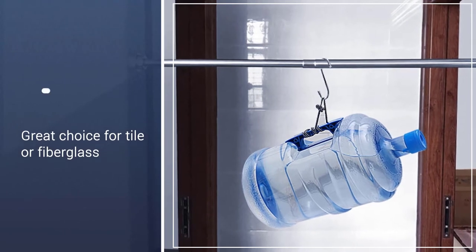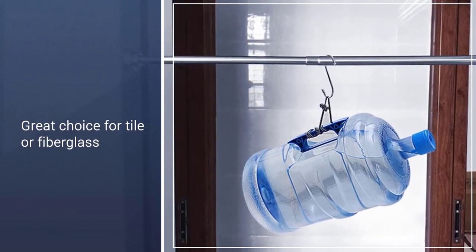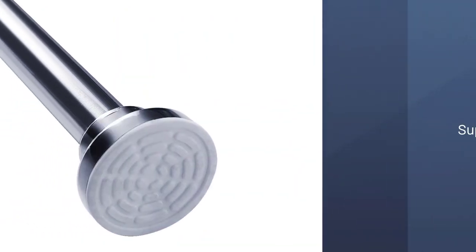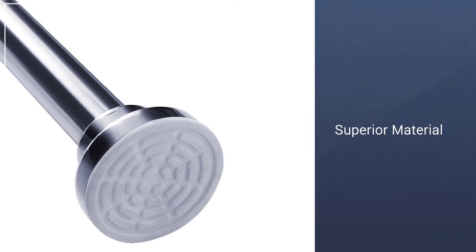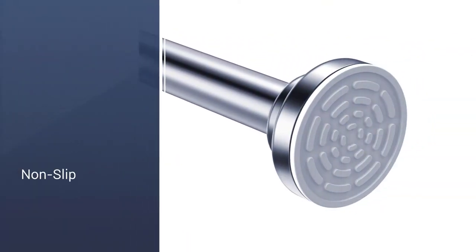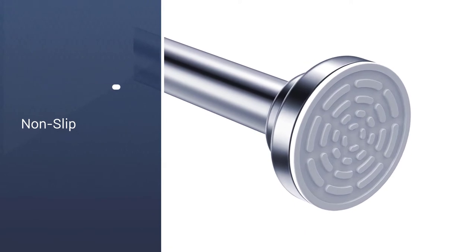By rotating the ends of the rod in different directions, the length can be adjusted. The rubber end caps suction to the wall without scratching. The rod is a great choice for tile and fiberglass.